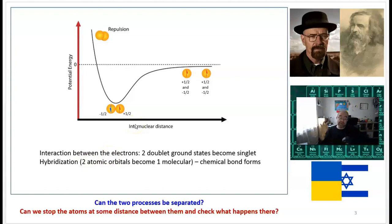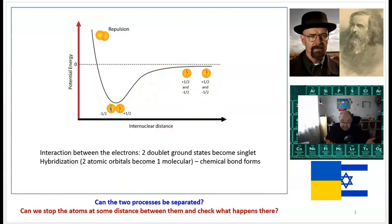Do they really need to happen at once? That's a theoretical question. The practical question: can we actually stop those two atoms at some distance between them and check what happens there?